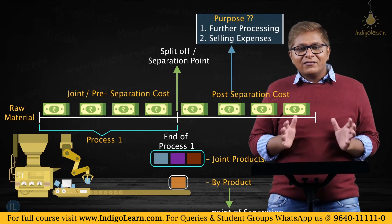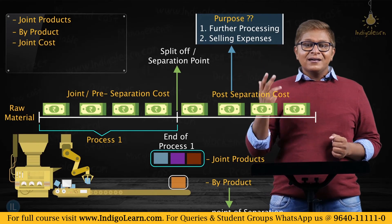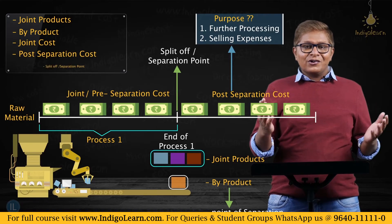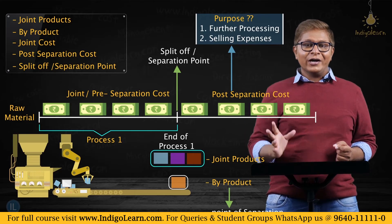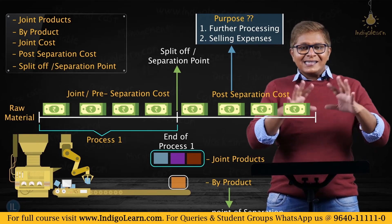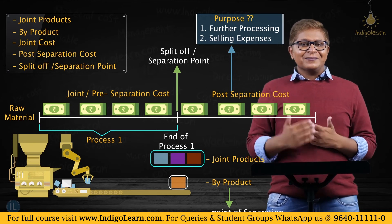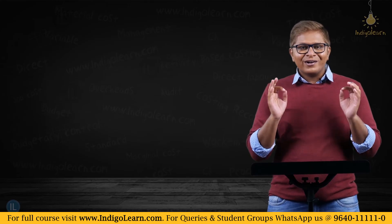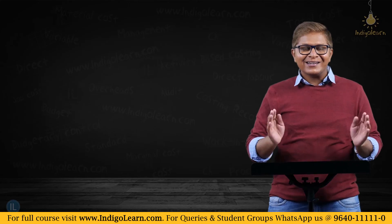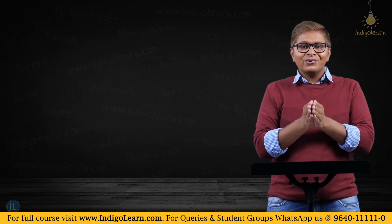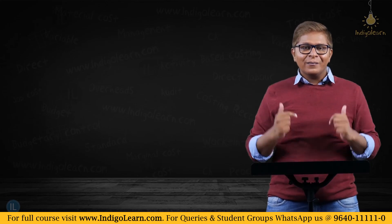So the key terms we have learned are: joint products, by-products, joint cost or pre-separation cost, further processing costs, post-separation cost, and the split-off point or point of separation. These key terms must be kept in mind as we understand the concept. The most important discussion in this topic will be how to segregate, apportion, and distribute the joint cost between the various products that emerge out of a common process.